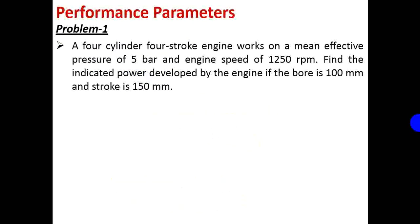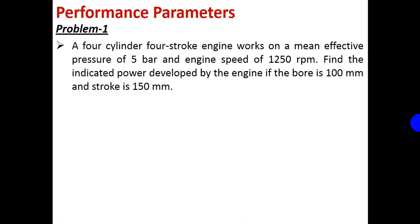Let us take this problem. A 4-cylinder 4-stroke engine works on a mean effective pressure of 5 bar and engine speed of 1250 RPM. Find the indicated power developed by the engine if the bore is 100 mm and stroke is 150 mm.